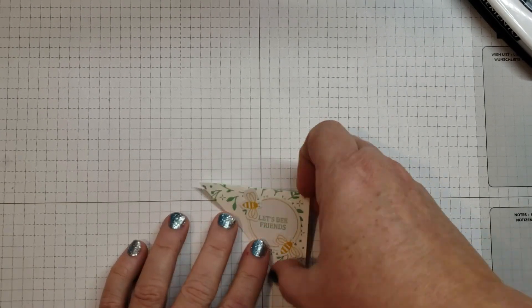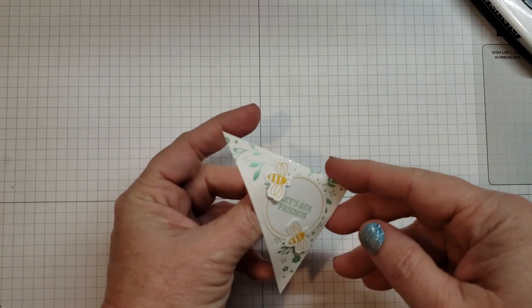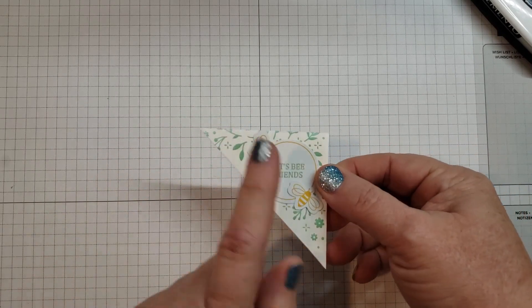We're going to do these two projects together really quick. This is just a simple idea, but it's a bookmark placer. You just put that over the edge of your book. 'Let's be friends' - wouldn't those be fun for the classmates?